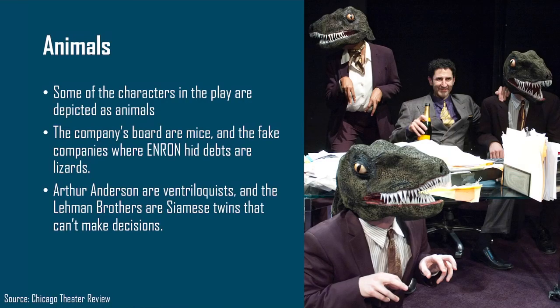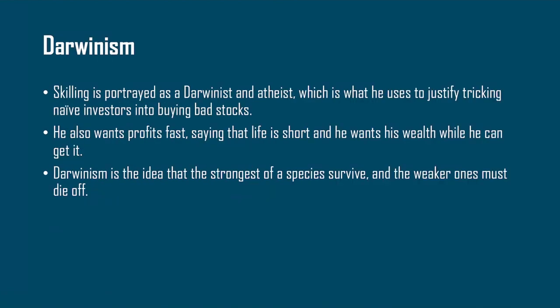In terms of analysis, the first point is the use of animals in the play. Some of the characters are depicted as animals: the company's board are mice, and the fake companies where Enron hid its debts are lizards. Arthur Anderson are portrayed as ventriloquists, and the Lehman Brothers are Siamese twins who can't make decisions.